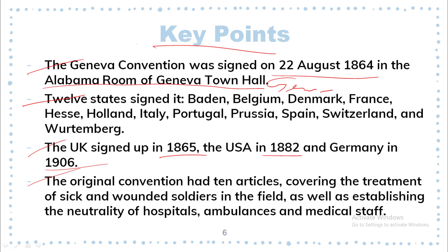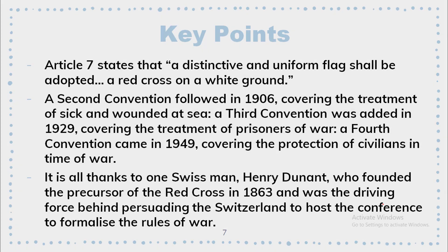The original convention had 10 articles covering the treatment of sick and wounded soldiers in the field, as well as establishing the neutrality of hospitals, ambulances and medical staff. Article 7 states that a distinctive and uniform flag shall be adopted — a red cross on a white ground. A second convention followed in 1906, covering the treatment of sick and wounded at sea.